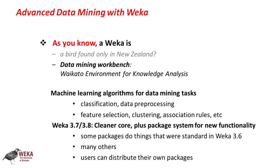In this course, we're looking at versions 3.7 and 3.8 of WEKA — 3.7 onwards — whereas the previous courses looked at WEKA 3.6. These new versions have got a cleaner core, plus a system where you can install packages that put in new functionality. Some of these packages — and there's a lot of them — do things that were already in the core previously; they've been stripped out to make a cleaner WEKA core. There are lots of other packages, and users can actually create and distribute their own packages to put extra things in WEKA.